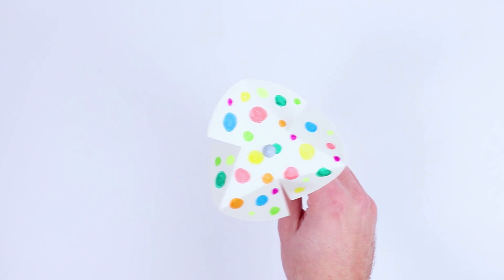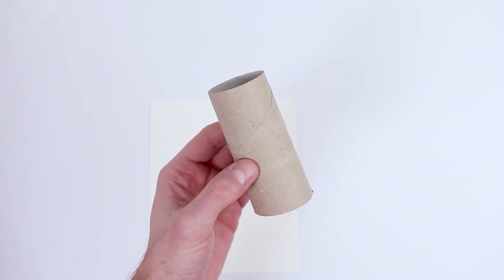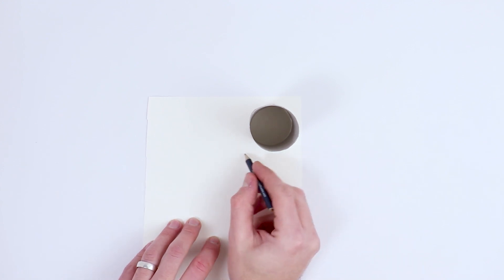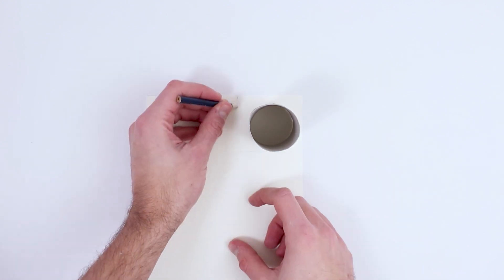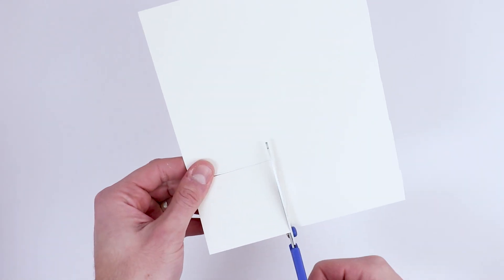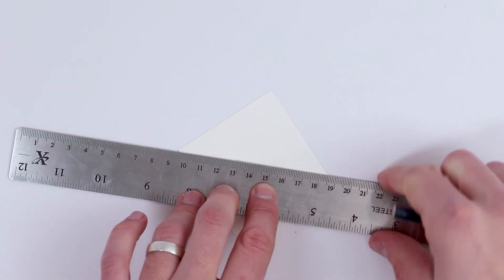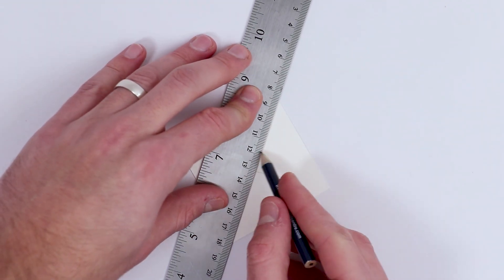And now we'll prepare something for the windmill blades to stand on. Take a toilet roll and place it on a piece of card. Draw out a base slightly bigger than the toilet roll, then carefully cut it out using a pair of scissors. Cut out two pieces of card to this same size, then on one of the pieces of card mark the center point by measuring from each corner of the piece of card.